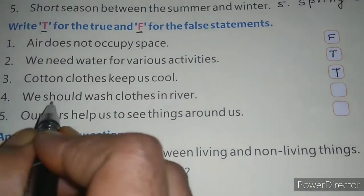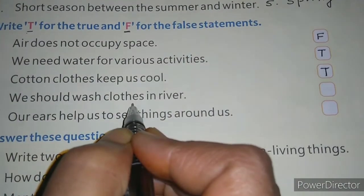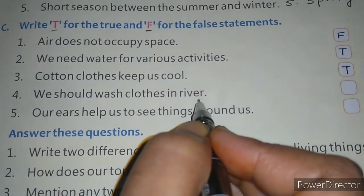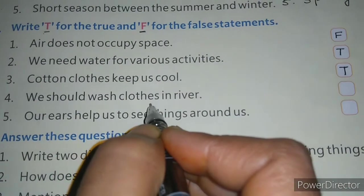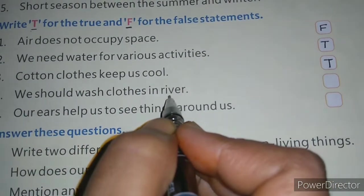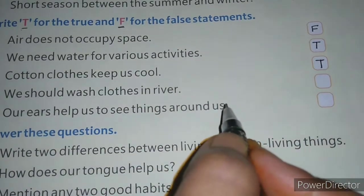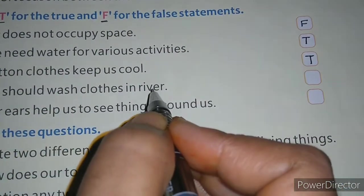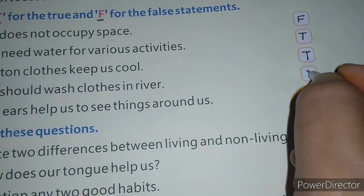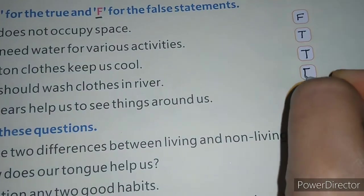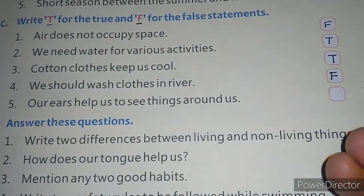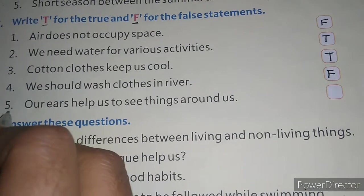Fourth is: we should wash clothes in the river. Is it a correct sentence? No. We should not wash clothes in the river because it makes the river dirty or polluted. So this statement is false and you will write F there.